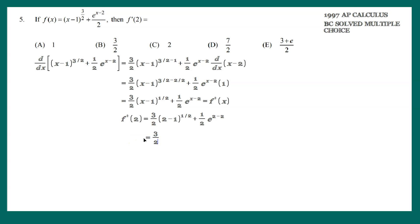So this would be 3 halves, this would be 2 minus 1 is 1, 1 raised to the 1 half is 1, plus 1 half, this is e raised to the 0. Continue. This is now 3 halves times 1, which is 3 halves, plus e to the 0 is 1, 1 half times 1 is 1 half.